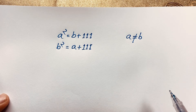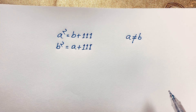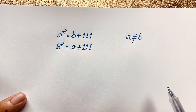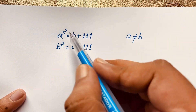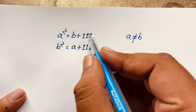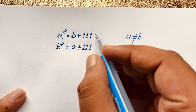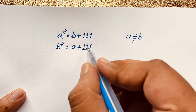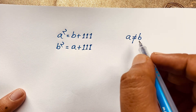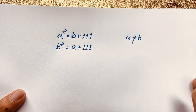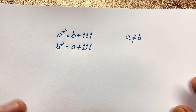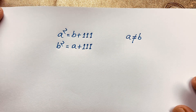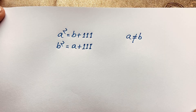Hello everyone, welcome to Russia's Classroom. Today we are solving an interesting German Math Olympiad question. The question is: a squared equals b plus 111, and b squared equals a plus 111, where a is not equal to b. We need to find the values of a and b.